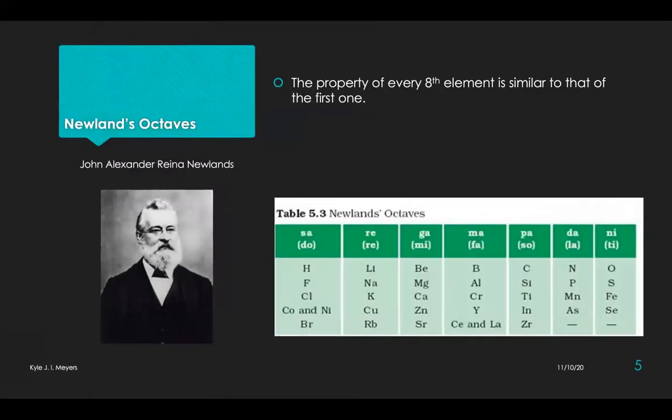Later on came an English chemist, Alexander Newlands, who made the next attempt at classification of elements. He arranged the 56 known elements in an increasing order of their atomic weights, and observed that the properties of every eighth element are similar to that of the first. Hydrogen, fluorine, chlorine, and bromine all of them have a valency one. But today we do know the different natures of hydrogen, the different behaviors it shows.